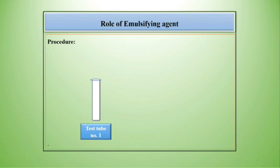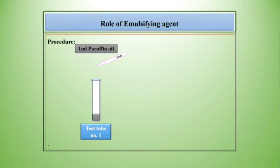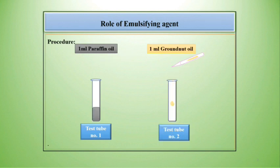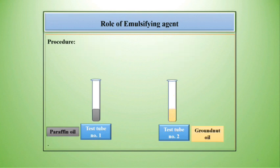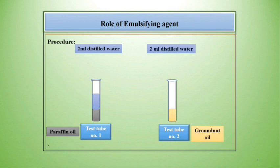Procedure: Take test tube number 1 and add 1 ml paraffin oil in it. Then take test tube number 2 and add 1 ml ground nut oil in it. Now add 2 ml distilled water in test tube number 1, and similarly add 2 ml distilled water in test tube number 2.